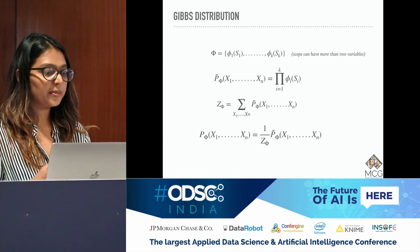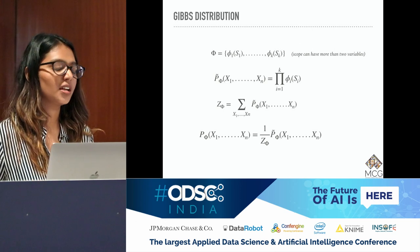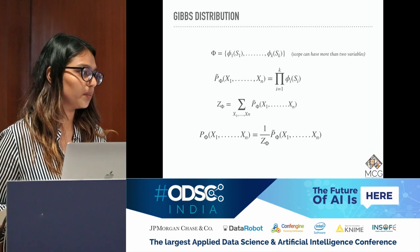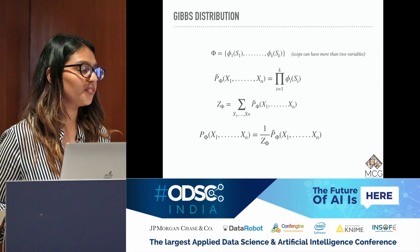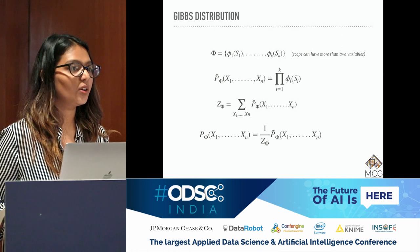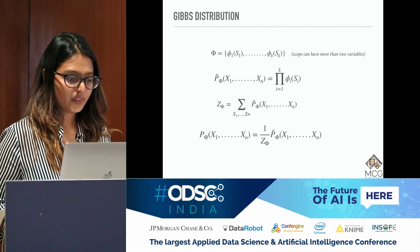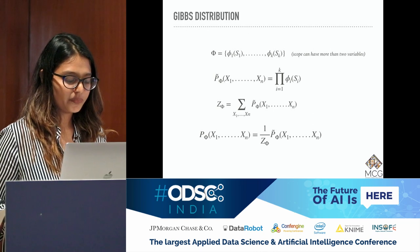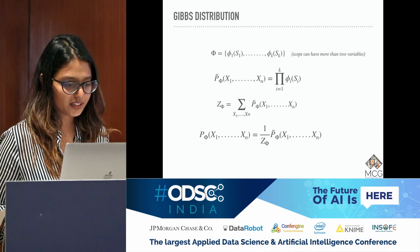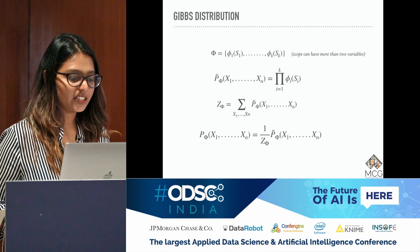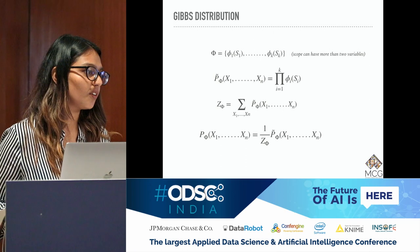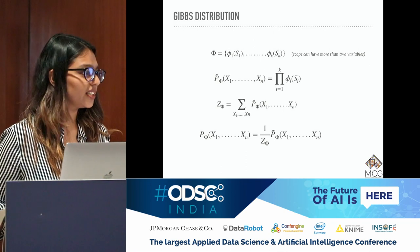The Gibbs distribution is the same concept but in a Gibbs distribution your factors can have more than two random variables, unlike pairwise Markov networks where the scope was only two random variables. Here you can have three or four or as many as you like depending on the application. The unnormalized probability is calculated by taking a product, and the normalizing constant is calculated by summing over all combinations of random variables, then dividing both.